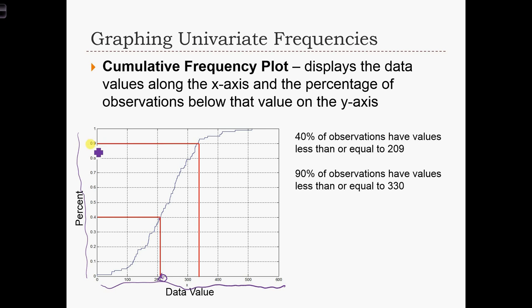Over here, if we go across from the 90% to the blue graph over here and draw a line down, we see that 90% of observations have a data value below 330.